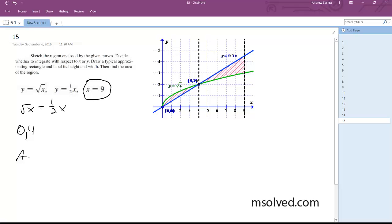So the area in this case setting this equation up is going to be 0 to 4 square root of x minus 1.5x dx plus 4 to 9 which is 1.5x minus the square root of x dx.